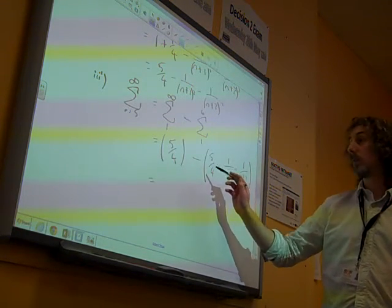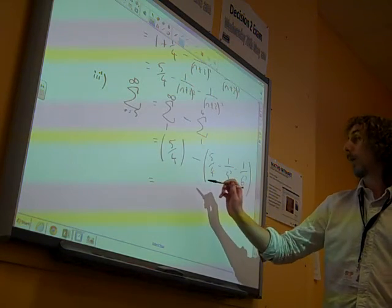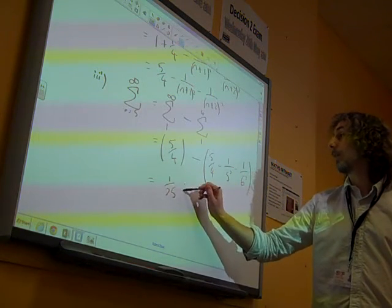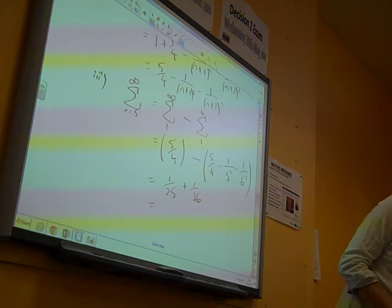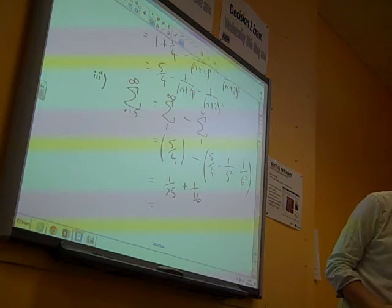So the 5 over 4 cancels out, and we're left with a 25th plus a 36th, which combines to give something, doesn't it? 61 over 900.